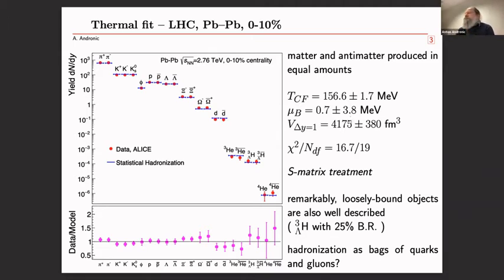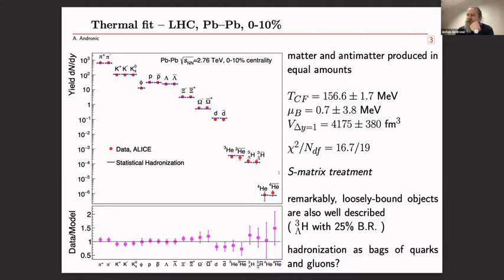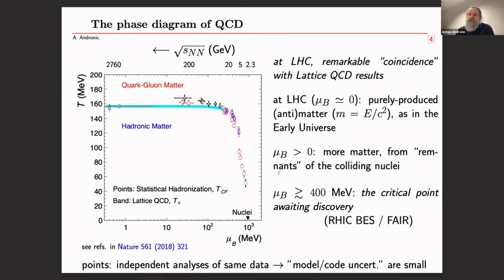The formerly known proton puzzle is also solved via the S-matrix treatment of the interaction, which I won't detail here. As Alex Calvite had just discussed, loosely bound objects are also described very well. That leads us to think of hadronization as bags of quarks and gluons, and the relevance of this fit is in the phenomenological QCD phase diagram.